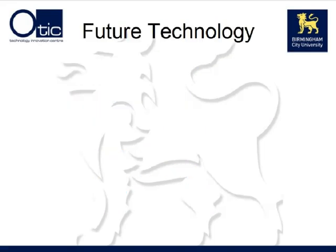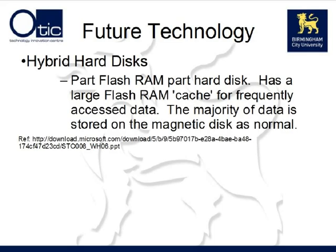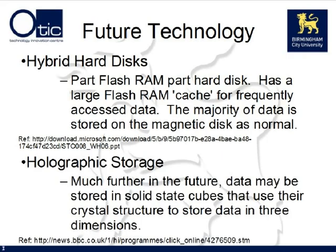Now that we've looked at some common technologies found in modern computers, what about the future? Demands on storage grow ever greater, and as the demands increase, so does the technology required to meet those demands. It is likely that soon hybrid hard disks will become common, combining the functions of flash RAM and a modern magnetic hard disk drive — the flash RAM is used for storing commonly accessed data, while the magnetic storage portion is used for storing less frequently accessed data. Looking much further into the future, large quantities of data can be stored via holographic storage, which will store data as solid state cubes that can be read by lasers.